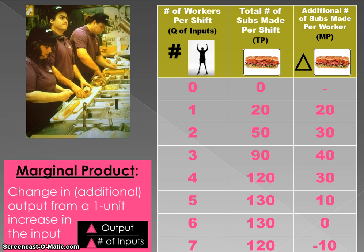Marginal product is just another way of looking at that data. Marginal product can be derived from total product — it's the derivative of total product if you're a calculus person. Marginal product is the change in output from a one-unit increase in the input: how much more output can be produced when we add one more input. So it's change in output over change in the number of inputs.